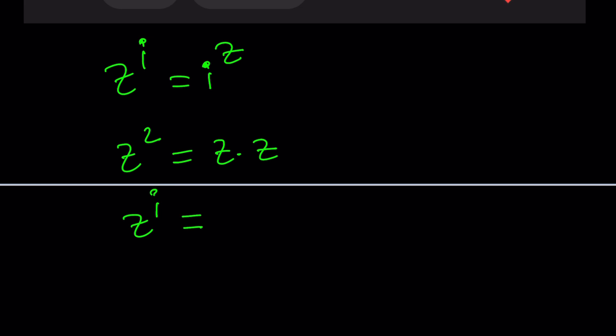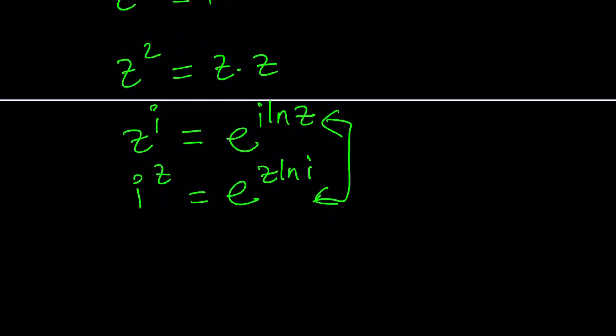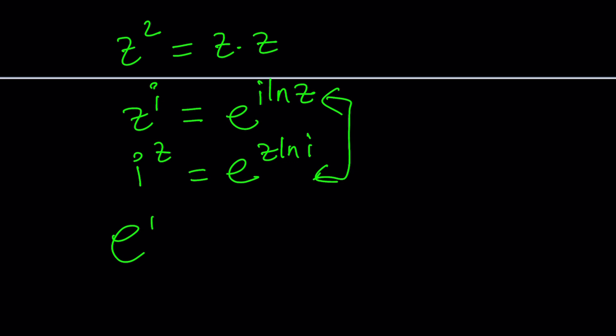We need to think differently. And thanks to Euler, we have a really nice formula. z to the i can be expressed as e to the power i ln z. Similarly, i to the power z can be expressed as e to the power z ln i. And we want these to be equal. Great. They're both exponentials. So we can write this as e to the i ln z equals e to the z ln i, which results in something interesting. Because if you just forget about e's or natural log both sides, uh-oh,